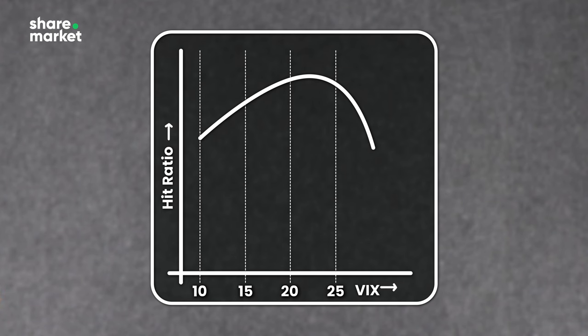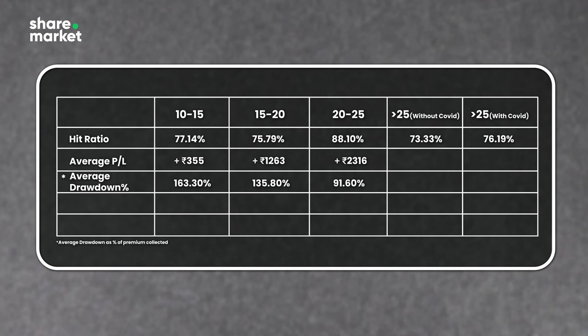This is the case in both COVID and non-COVID environments — it's not only in COVID that the hit ratio falls. Even in a non-COVID environment, deploying short strangle with VIX greater than 25 gives a lower hit ratio, which also impacts average P&L. The average P&L was increasing from 350 to 1200 to 2300 as we moved from the 10-15 to 20-25 range, but it actually turned negative above 25 — moving from positive 2300 to negative 1600.